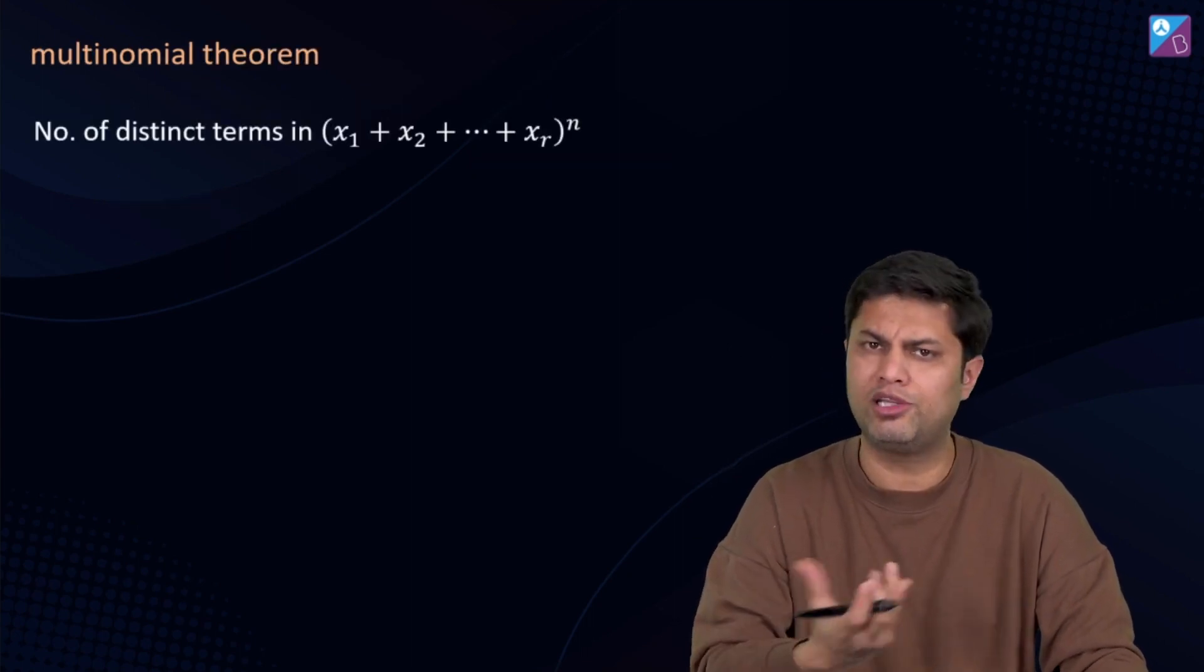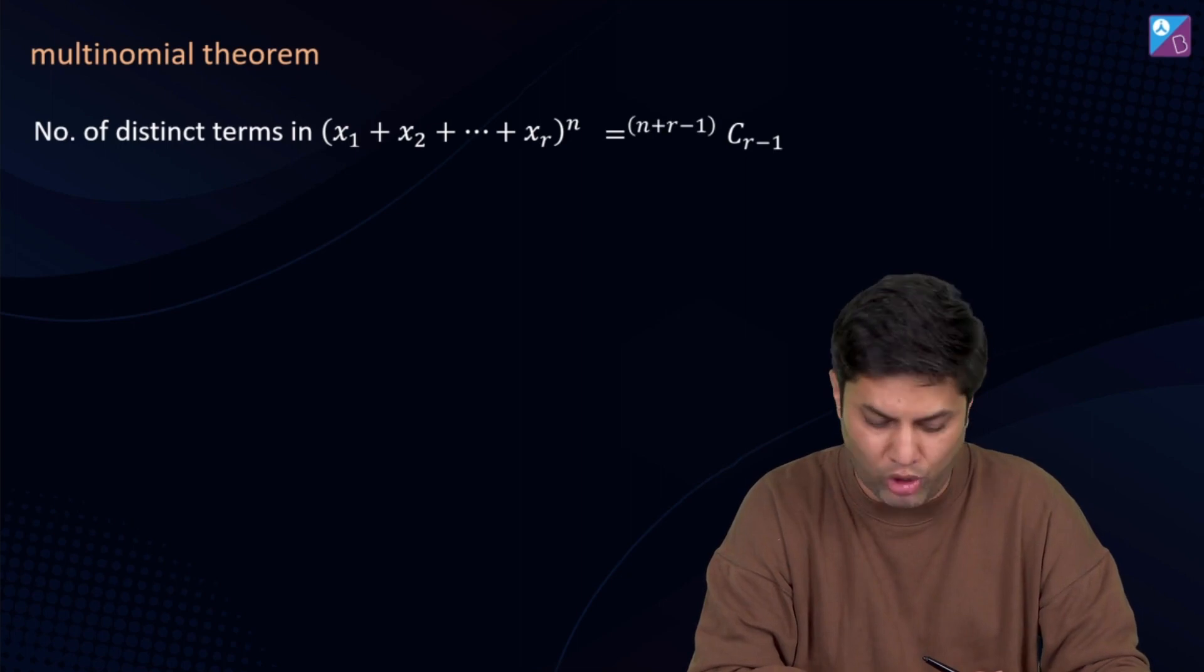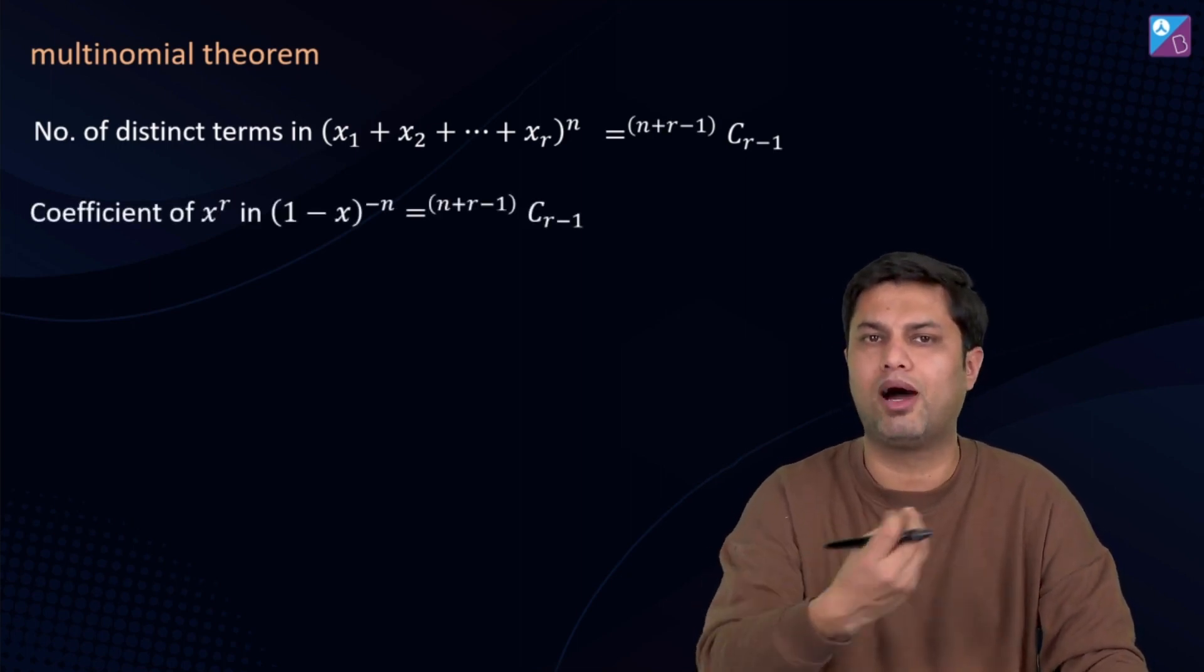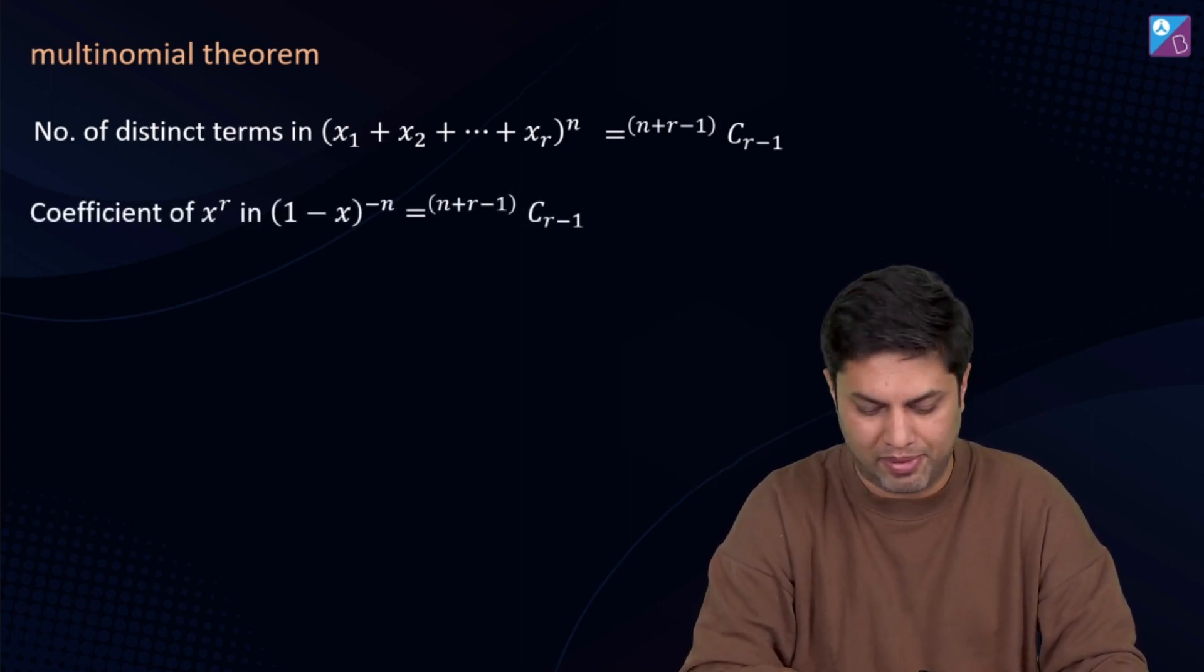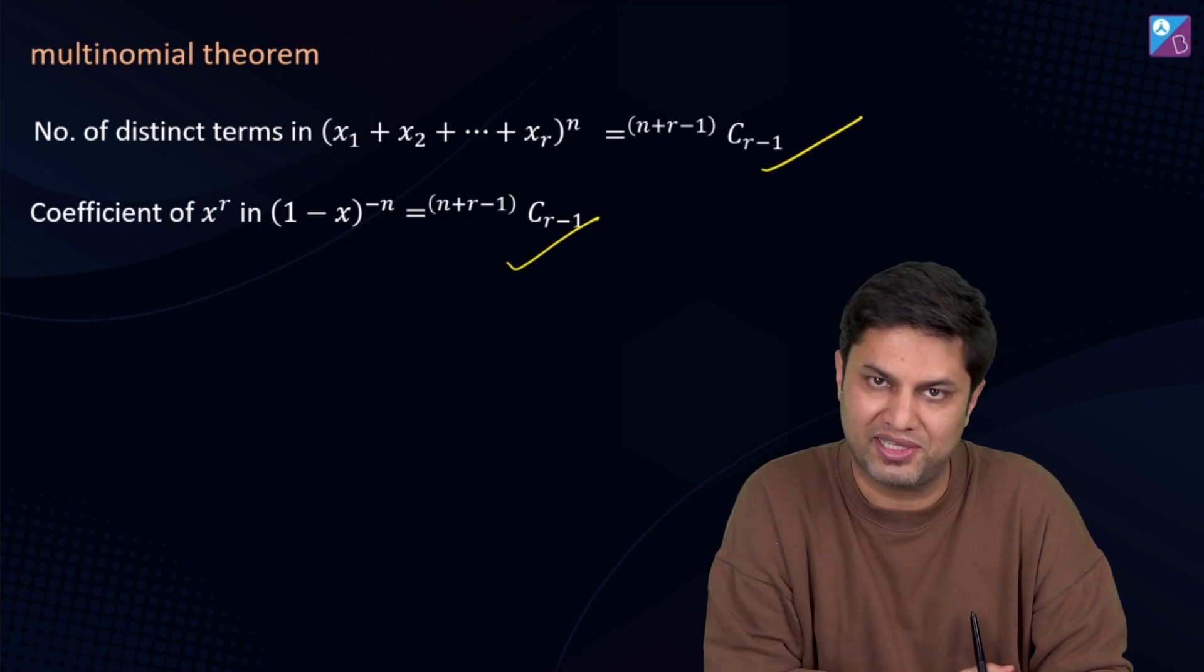Finally, the multinomial theorem. Number of distinct terms in (x1 + x2 + ... + xr)^n is n+r-1Cr-1. And last but not the least, coefficient of x^r in (1-x)^(-n) is n+r-1Cr-1. These are also the formulas that you use in a lot of places.